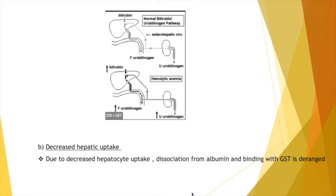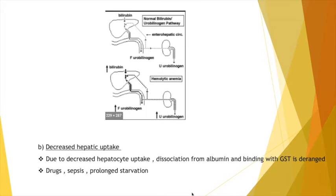The next reason for unconjugated hyperbilirubinemia is decreased hepatic uptake. Here the liver's uptake of bilirubin is decreased, and thus dissociation from albumin and binding with glutathione-S-transferase will also be deranged. This can be due to drugs, sepsis, or prolonged starvation.